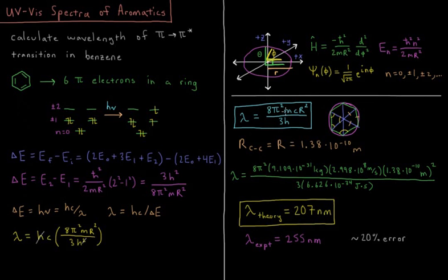So we know the mass of the electron, we know the speed of light, we know Planck's constant. What we haven't discussed yet is what is the radius of this molecule.